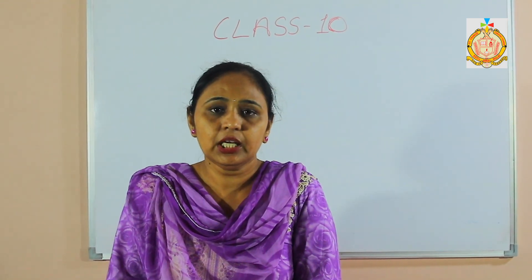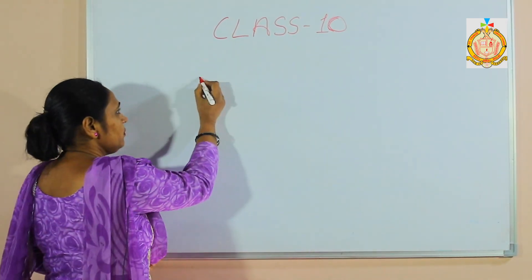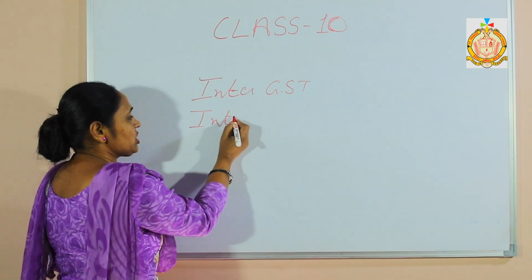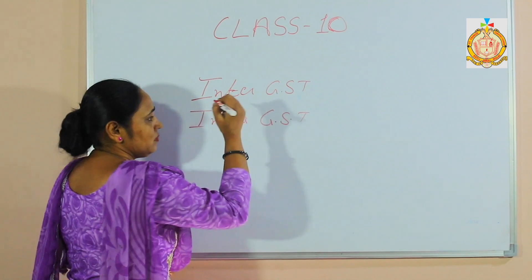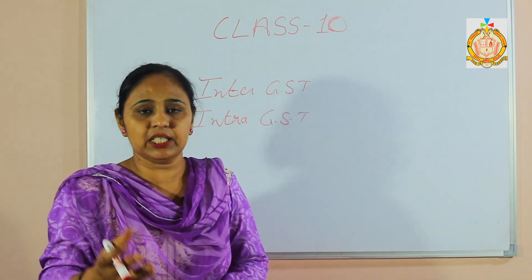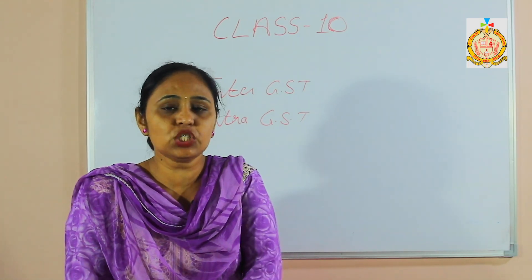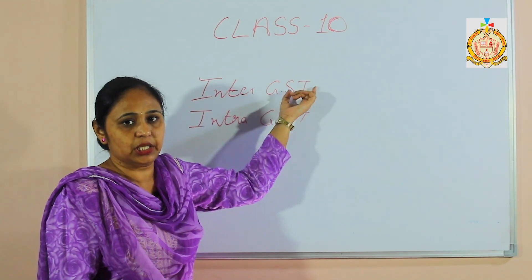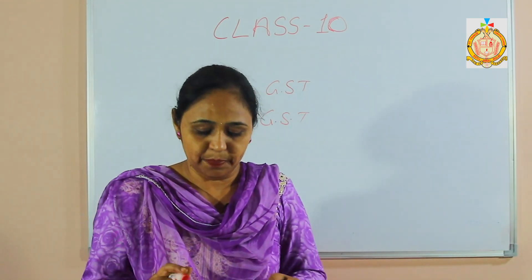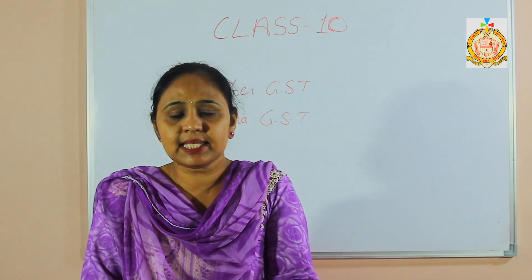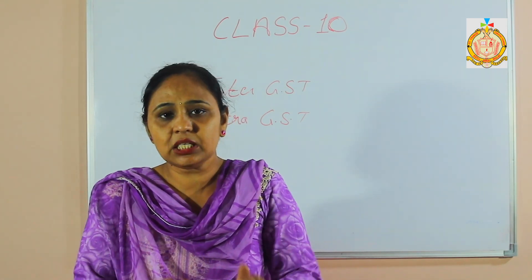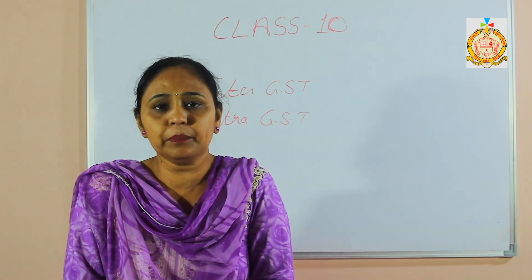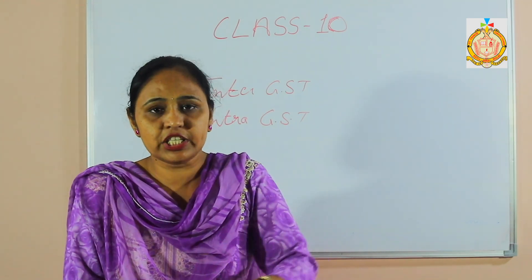There are two more types: inter-GST and intra-GST. Think of 'international' — that means one nation to another. Similarly, 'inter' means one state to another state, and 'intra' means inside the state. So when we buy something produced in Punjab and use it also in Punjab — for example, Amritsar to Jalandhar, or Ludhiana to any other city of Punjab — that is an intra-state transaction.